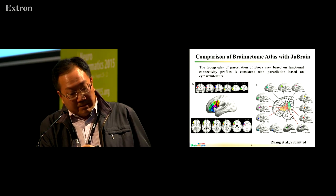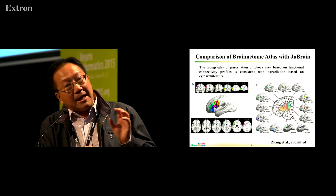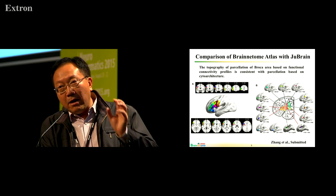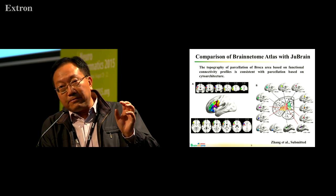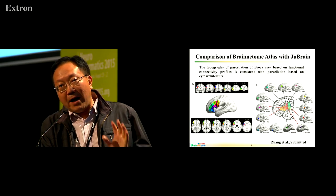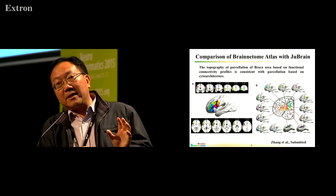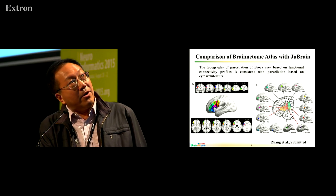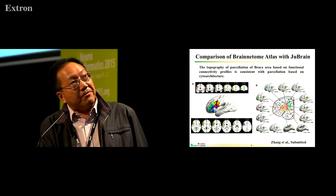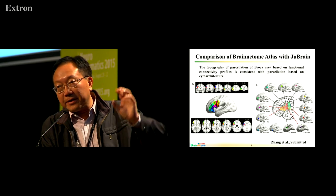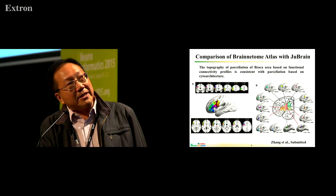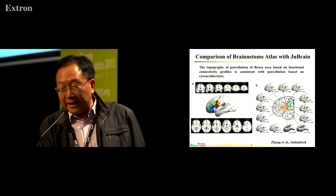In fact, for some regions that can be parcellated with cytoarchitecture as well as with the connectivity profile, we find the results are the same. Here I show you one example with the Broca's area. If we parcellate it with two different types of information, we find the results have a very good correspondence.